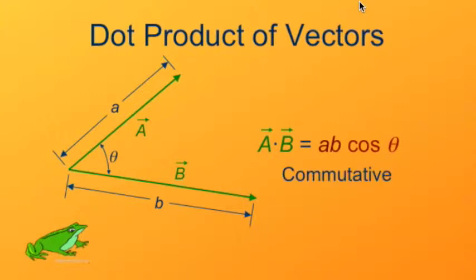It turns out that this dot product operation is commutative. It doesn't matter if you do a dot b or b dot a, they give you the same result.